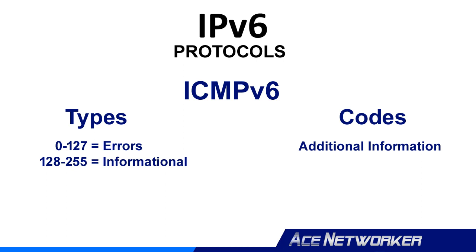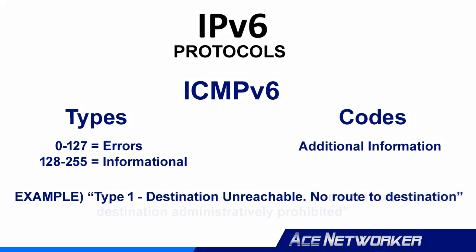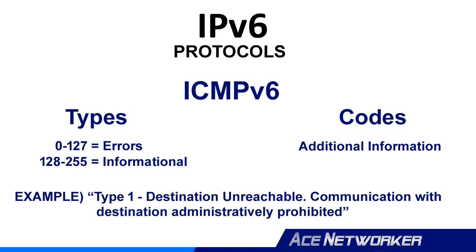ICMPv6 still uses types and codes just like ICMPv4. Let's take a quick look at those. For ICMPv6, types from 0 to 127 are used for error messages, and type numbers 128 to 255 are used for informational purposes. Codes give us more detailed information for either the error or the informational type. For example, for error type 1, destination unreachable, there are eight different codes from 0 through 7. Each one represents a different reason why the destination was unreachable, such as no route to destination, communication administratively prohibited, and port unreachable.